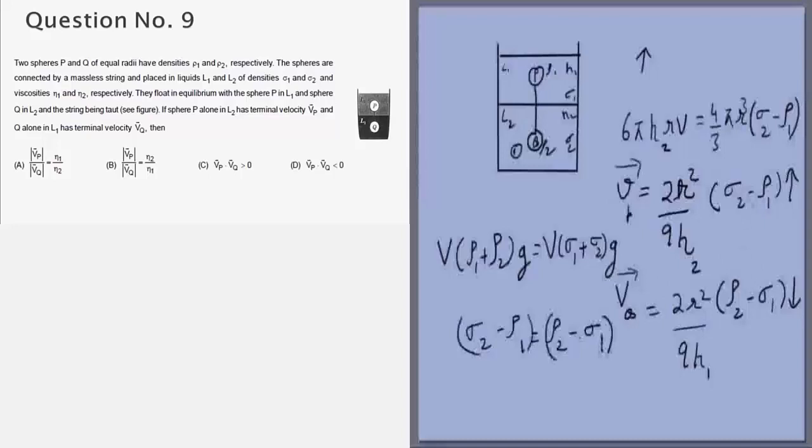If those two terms are equivalent then the magnitude of VP by magnitude of VQ will simply be η₁ by η₂.